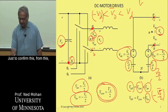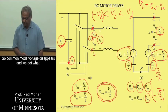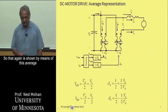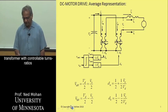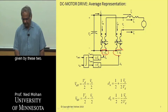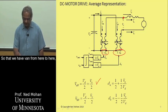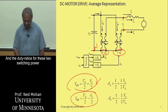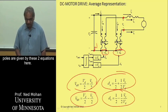Just to confirm: V0 equals V_AN minus V_BN, so the common mode voltage disappears and we get what we were trying to synthesize. This is shown by means of an average circuit where each power pole is replaced by an ideal transformer with controllable turns ratios. These equations are repeated: V_AN is given by one equation, V_BN by another, and the duty ratios for these two switching power poles are given by these two equations.